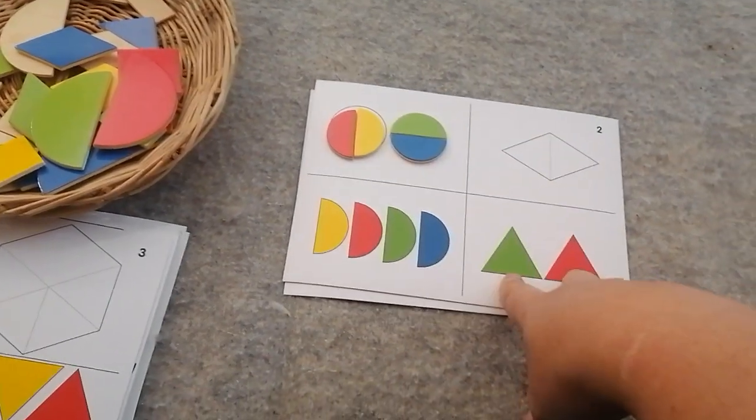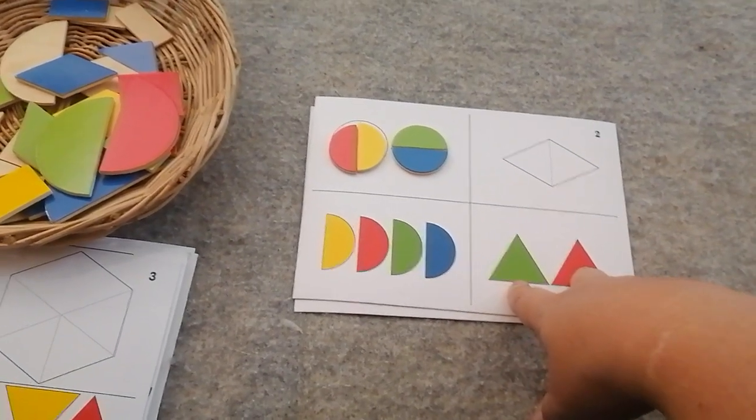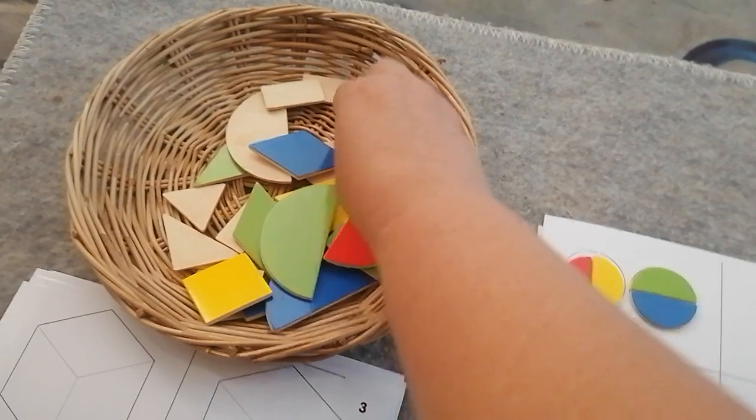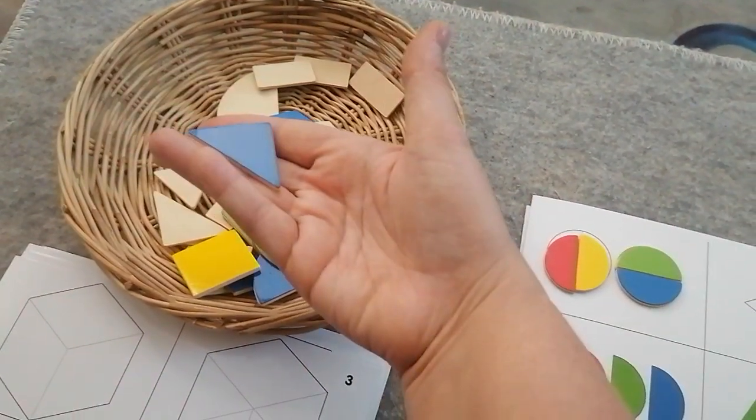Cool. Now we need a green triangle and a red triangle. There's different triangles in here. There's these triangles, which we used last time.